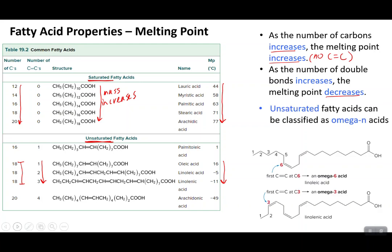For unsaturated fatty acids, we can classify them as omega-N acids. We number the carbon chain starting from the tail end — not from the carboxylic acid side — counting one, two, three, four, five, six, until we reach the carbon bearing the first carbon-carbon double bond. That carbon gets the omega designation. So an omega-6 fatty acid has its first double bond at the sixth carbon from the end. For linolenic acid, an omega-3 acid, the first double bond is at carbon three from the tail.